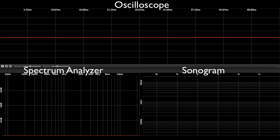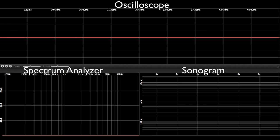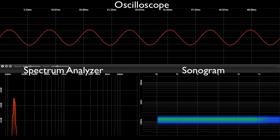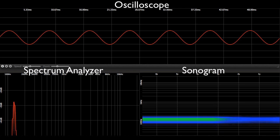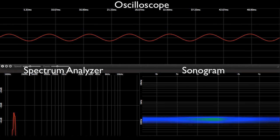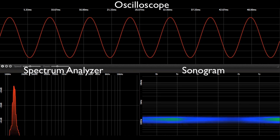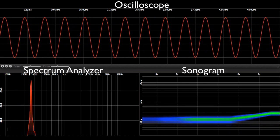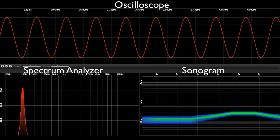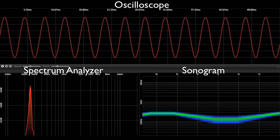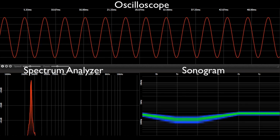Let's review. If I play a note at a single frequency, which is a sine wave, and I change its amplitude, we see it as a vertical change on the oscilloscope, we see it as a vertical change on the spectrum analyzer, and we see it as a color change in the sonogram display. If I change frequency, we see it as changing the number of repetitions within the oscilloscope, we see it as a horizontal motion in the spectrum analyzer, and we see it as a vertical motion within the sonogram display.